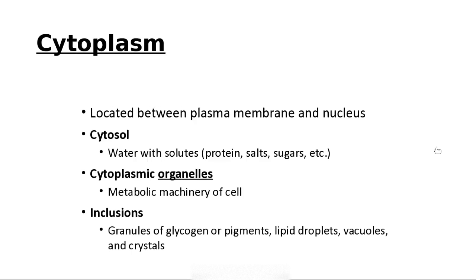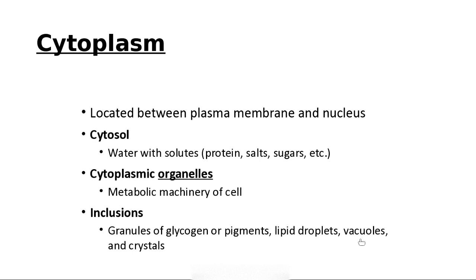The cytoplasm is located between the plasma membrane and the nucleus. It contains a cytosol, which is the watery stuff that makes up the cell with lots of solutes — sugar, salts, proteins — cytoplasmic organelles, which are the metabolic machinery of the cell, and inclusions. These are not actually living structures, but little particles wrapped in membranes: glycogen, pigments such as melanin that gives your skin its color, fat droplets or lipid droplets, vacuoles, and crystals.